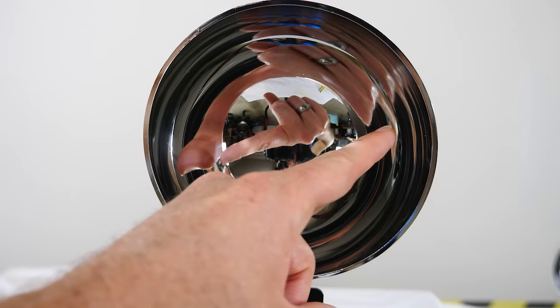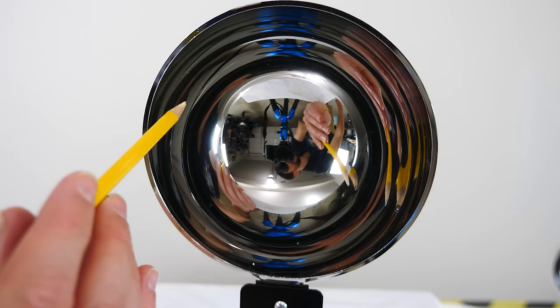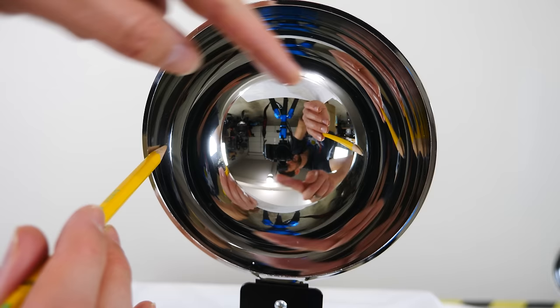You can see when I place the pencil here, how you can see its single reflection in the center. Then you can see another reflection here, another one here, another one here, another one here, and it gets darker and darker and darker.